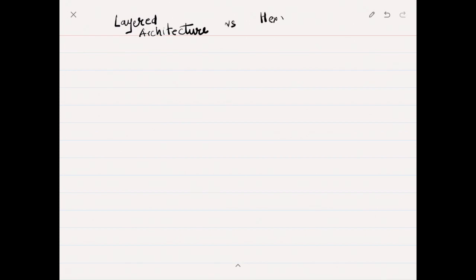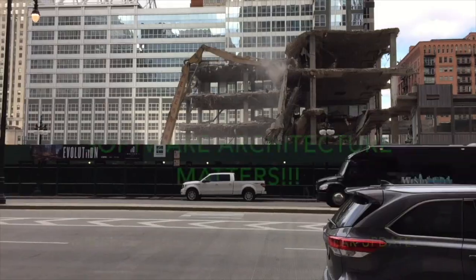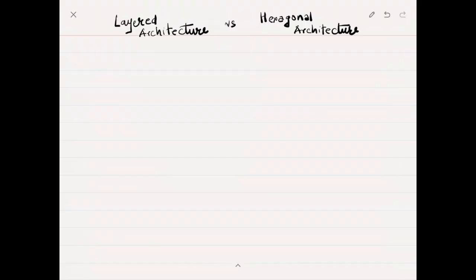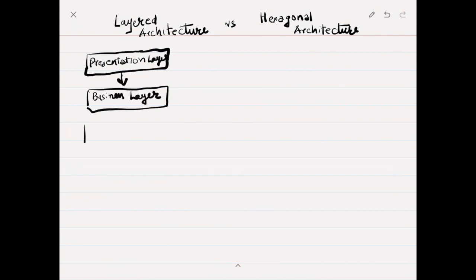Hexagonal architecture is another way of organizing your application into different layers. Let's see what is layered architecture. In layered architecture you have a presentation layer, you have a business layer, and you have a data access layer which talks to the database.